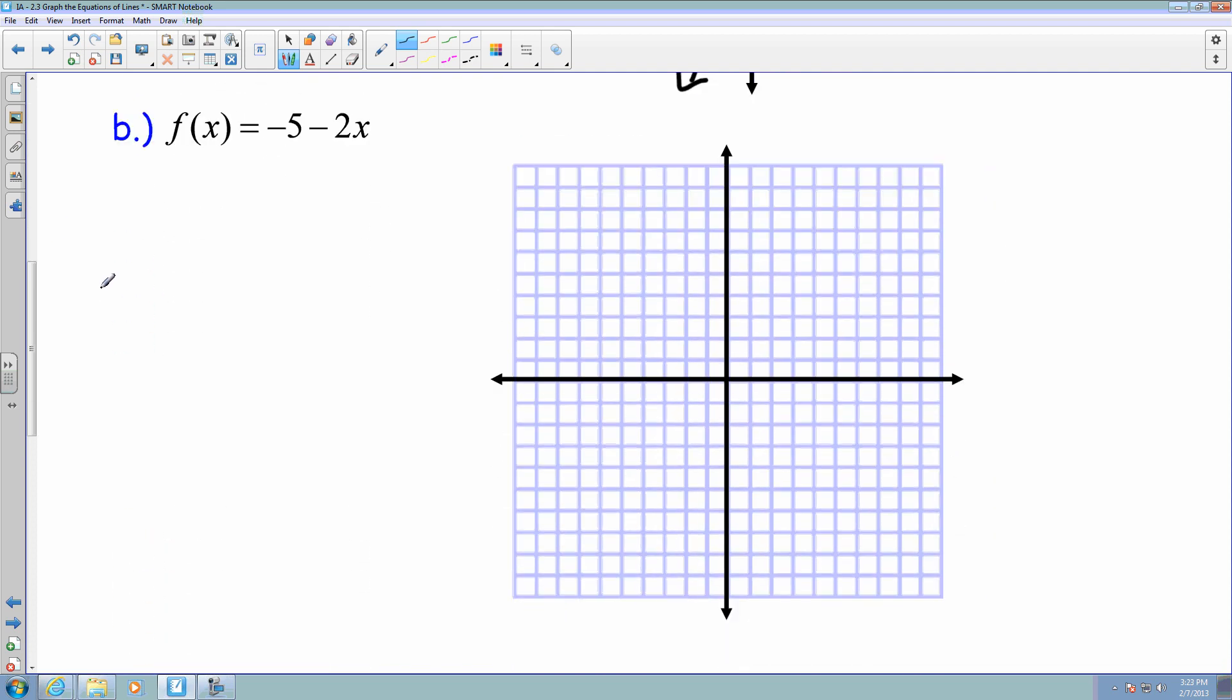For B, I have f of x equals negative 5 minus 2x. Now, don't get scared over f of x. f of x is the same thing as writing y. But what I want to do is I want to reorder this portion here. I want to have my x first, so I'm going to have my negative 2x first, minus 5. So then that gets put into slope-intercept form.